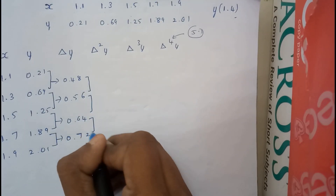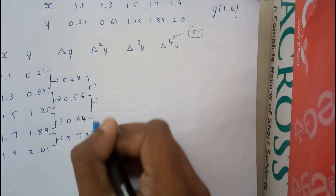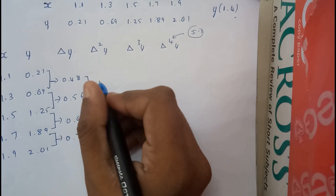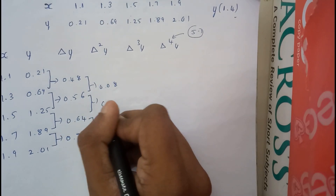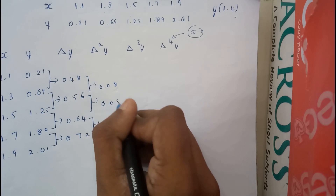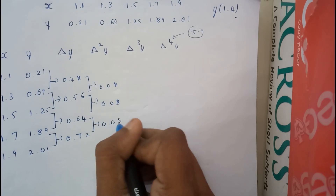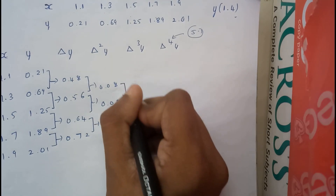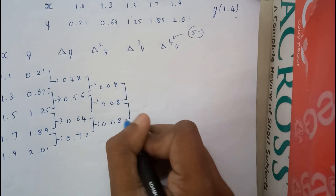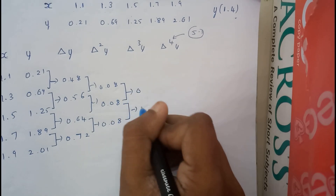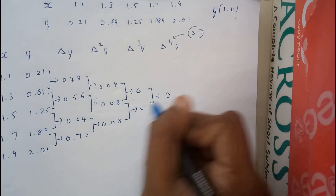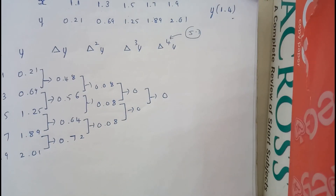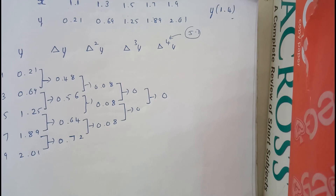Continuing the same process for Δ²y: subtracting consecutive Δy values gives 0.08, 0.08, 0.08. For Δ³y the values are 0, 0, and for Δ⁴y the value is 0 as well.